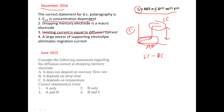The correct statement is that a large excess of supporting electrolyte eliminates migration current. As I explained, we use a large amount of indifferent or supporting electrolyte to eliminate migration current, because most of the current carried is then due to the electrolyte, and we only get diffusion current from the diffusion of the analyte. Please see my previous videos where I've explained each concept in detail.